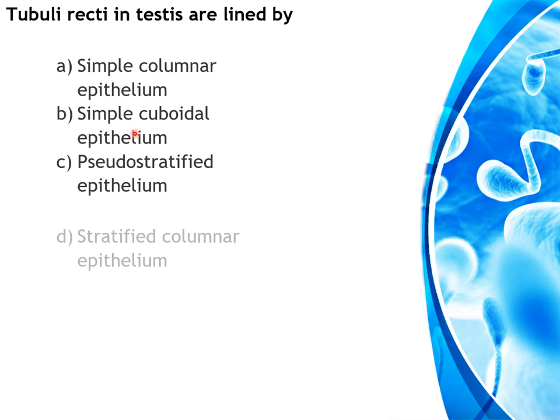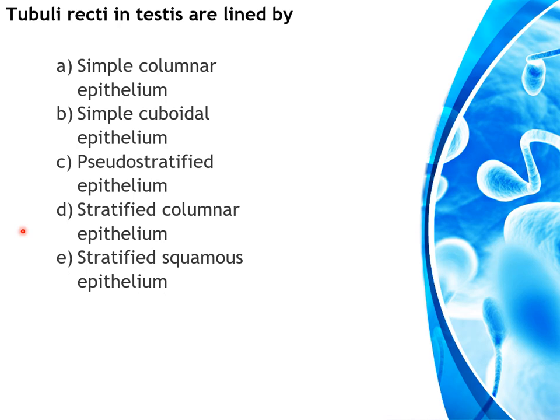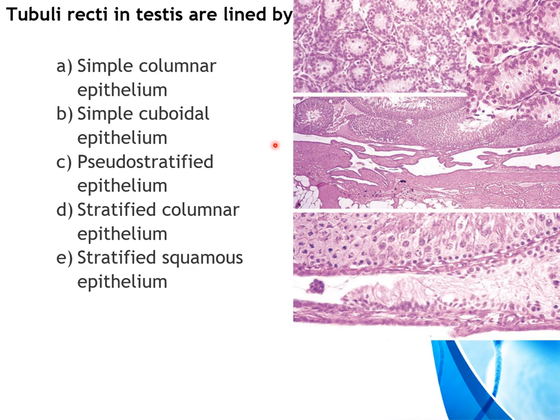Next question: the tubuli recti in the testes are lined by which epithelium — simple columnar, simple cuboidal, pseudostratified, stratified columnar, or stratified squamous? The diagram shows the area of the tubuli recti, rete testis, and a section through seminiferous tubules. The epithelium of the tubuli recti is simple cuboidal in nature; no Sertoli cells are present there. The answer is simple cuboidal epithelium.